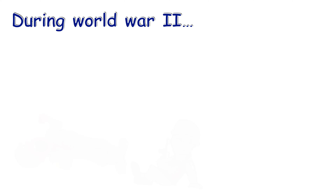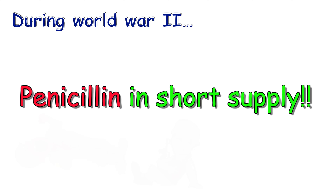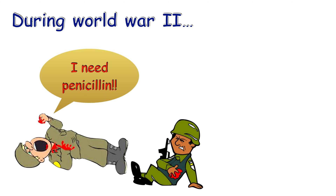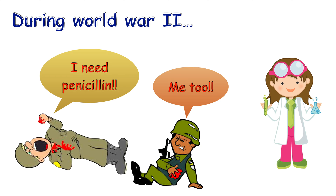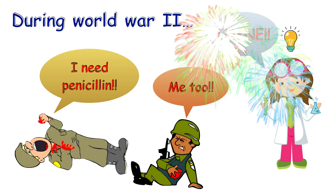During World War II, the world's first antibiotic, penicillin, was in short supply. To make up the shortfall, researchers came up with a novel way to get the penicillin that they needed — they did this by extracting and isolating penicillin from patients' urine.